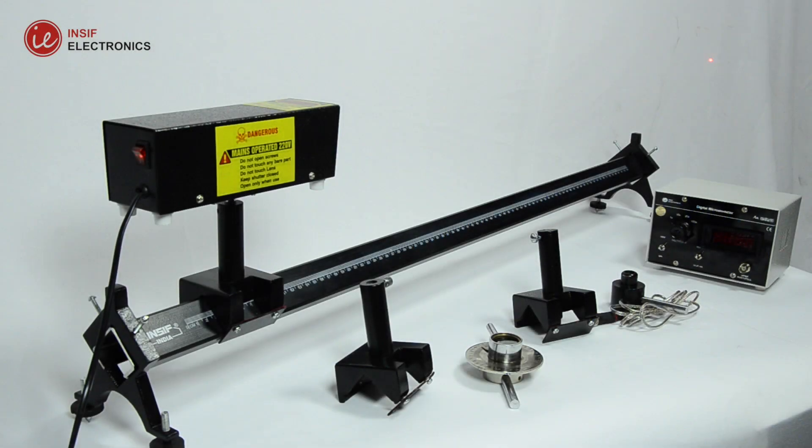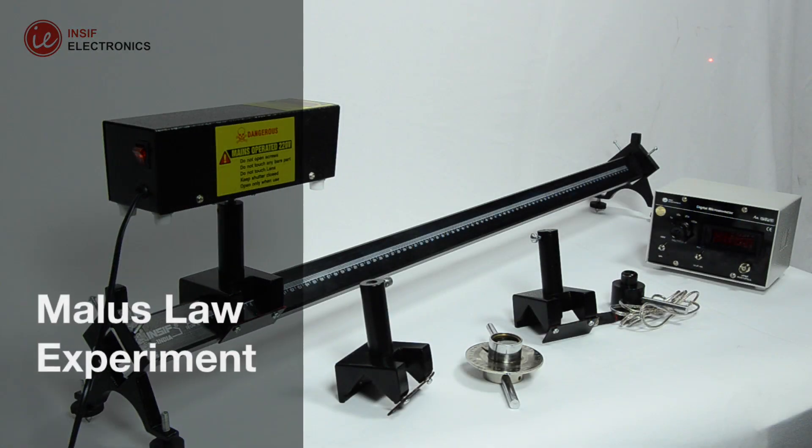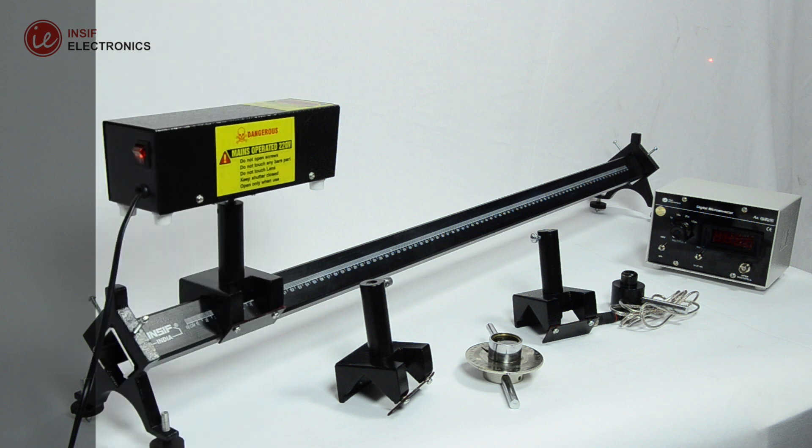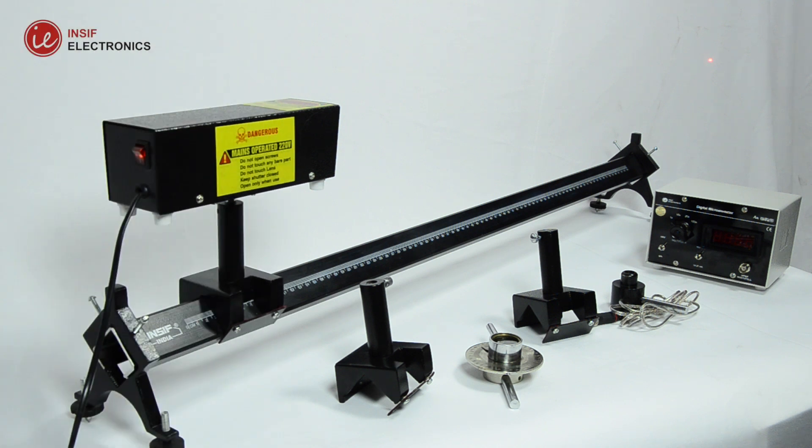In this video, we will be demonstrating the Malus's law experiment. According to Malus's law, when completely plane polarized light is incident on the analyzer, the intensity of the light transmitted by the analyzer is directly proportional to the square of the cosine of angle between the transmission axis of the analyzer and the polarizer.